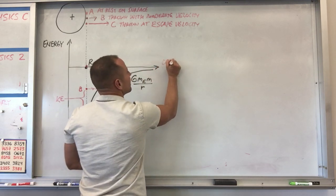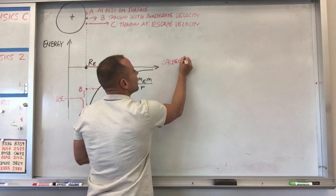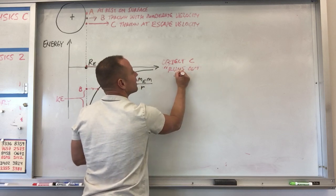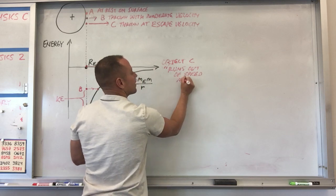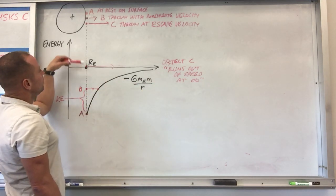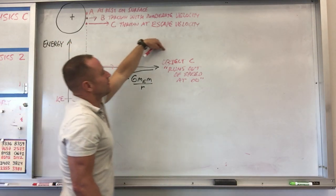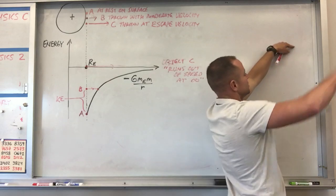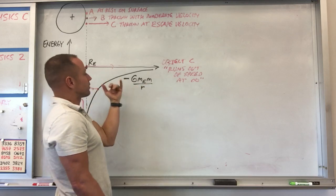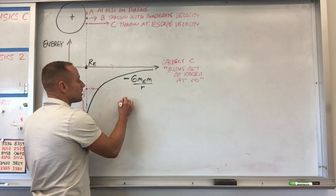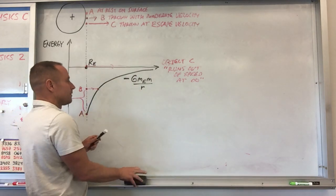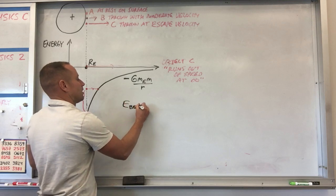So for object C, I'm going to say it in quotes kind of, it's like it runs out of speed at infinity. So the thing is you can throw something faster than that. You could just throw it even faster than the escape velocity. And then you would kind of think about it like it's completely escaped the Earth's gravitational well, and it's still got plenty of speed left over. And so what you can do if you want to figure out how fast you need to throw it to get it out of there is just compare the beginning state and the end state. So if we look at E before equals E after.